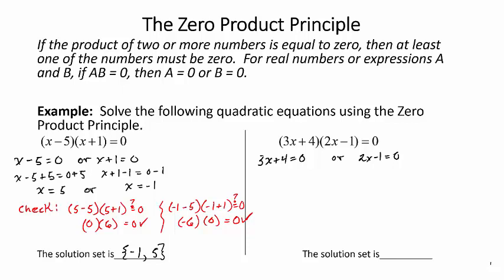Now I want to solve both of those equations. So I've got 3x plus 4 minus 4 equal to zero minus 4. And 3x is equal to negative 4. I'm going to divide both sides by 3. So x is equal to negative 4 thirds.